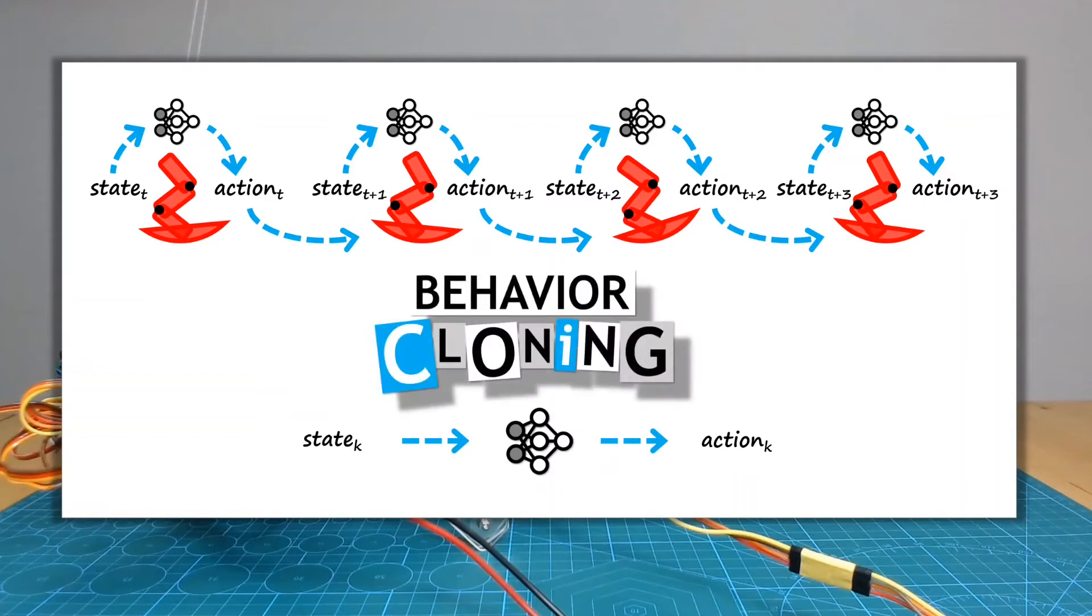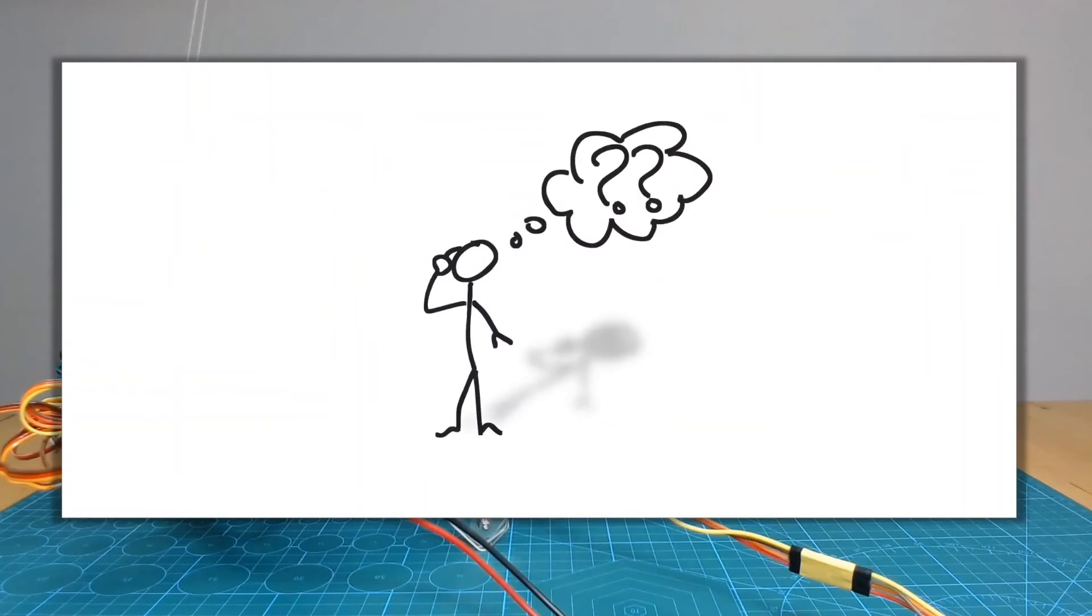I worked through this behavior cloning approach in some other videos to train an RC vehicle on the line following problem. It seemed to work OK for the car. But in our legs example, we don't have this expert to copy from. So what to do?